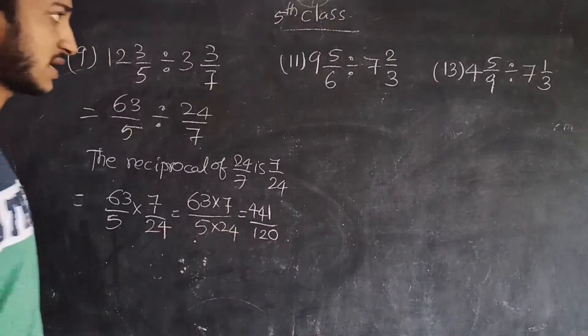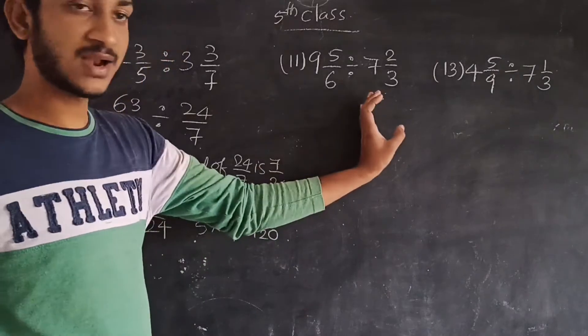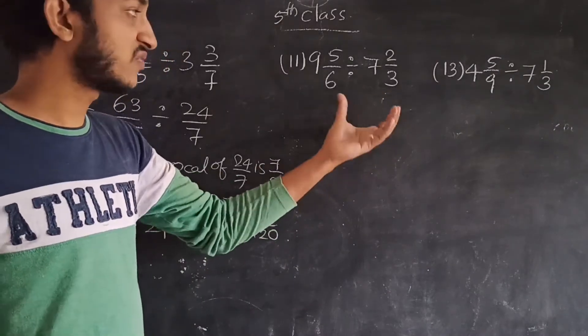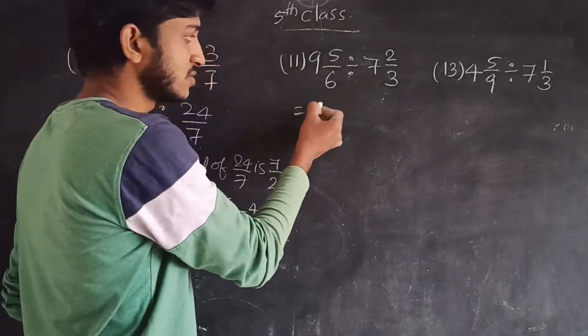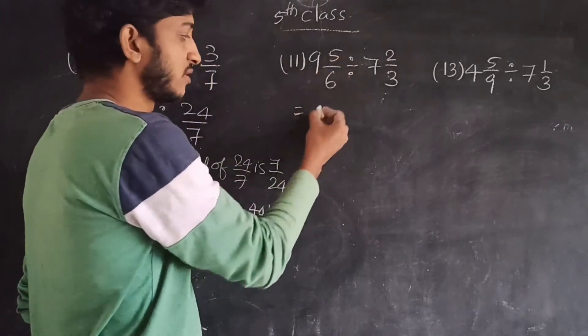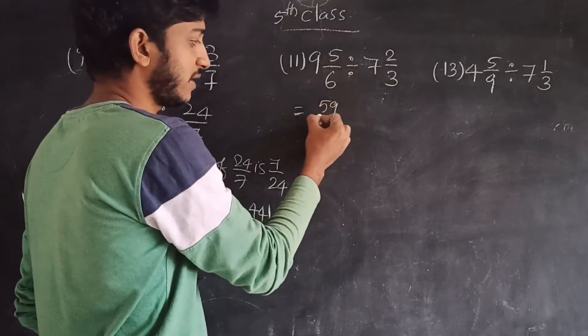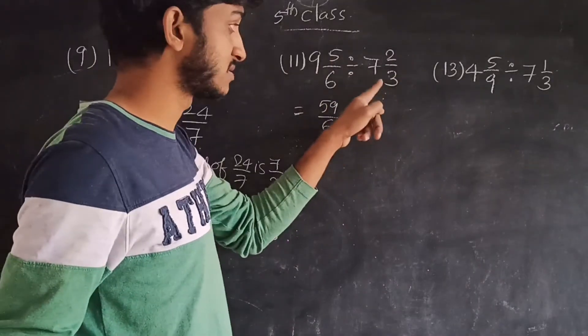So 441 divided by 120 is the answer. Okay, next problem children: 9 5/6 divided by 7 2/3. First convert them into improper fractions. So 6 times 9 is 54, 54 plus 5 is 59, divided by 6.